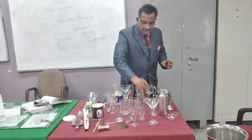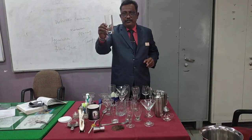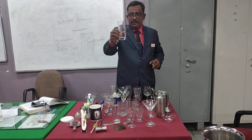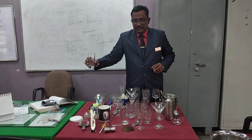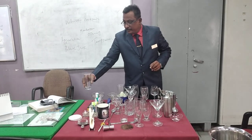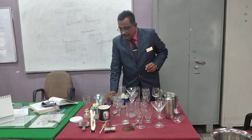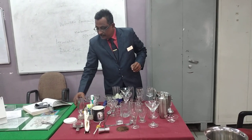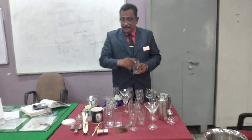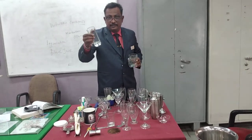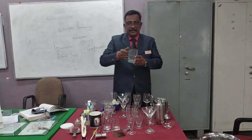This is a highball glass, generally used to serve water. It is kept on the table on the right-hand side, at the tip of the side knife. The capacity is about 4 to 6 ounces.